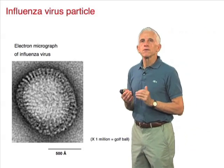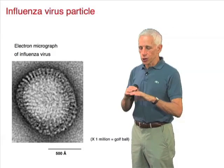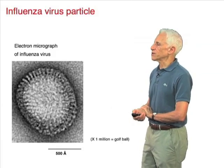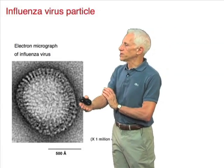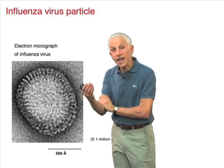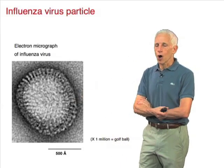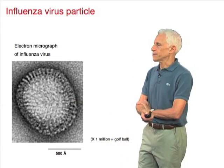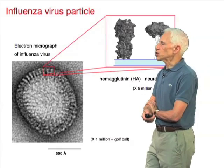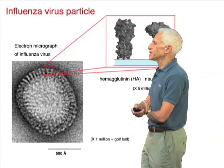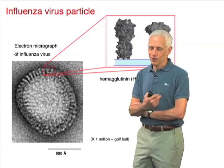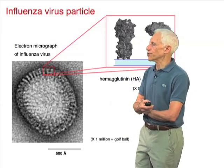Not all enveloped glycoproteins form such a regular array. In the case of the influenza virus particle, the proteins on the surface of the virus particle sticking out from the membrane are rather spike-like. There are two species, the hemagglutinin and neuraminidase — the H and N of H1N1 or H5N1 that you read about when pandemics threaten.